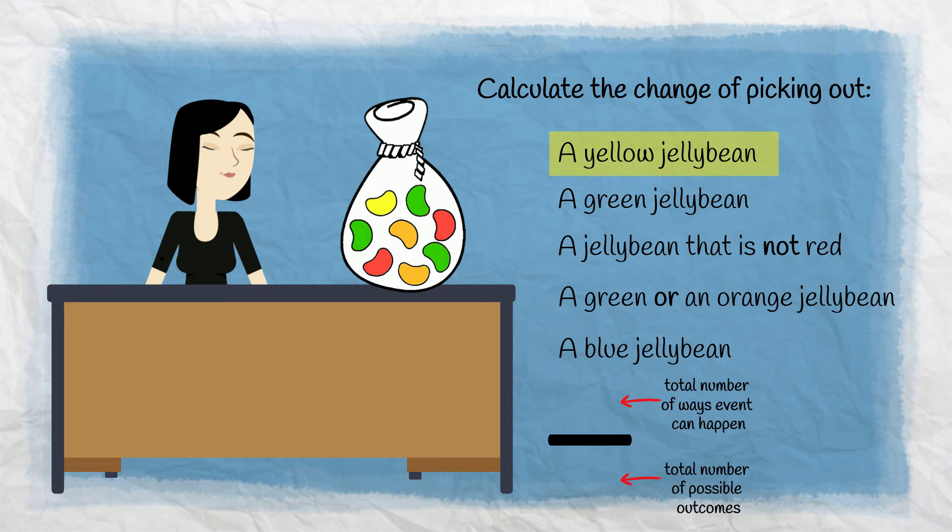Let's see how you went. The chance of picking a yellow is 1 in 8, because there are 8 jelly beans. There are 8 total possible outcomes. There is only one way this particular event can happen, by choosing this jelly bean. Expressed as a decimal, 1 over 8 is 0.125.